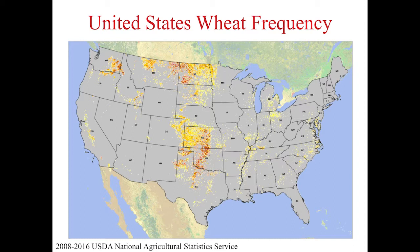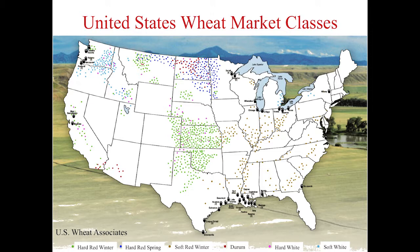Since the 1960s, a number of varieties with resistance genes have been very effective and we no longer have stem rust epidemics in the United States. So why are we even working on it? The reason is because of UG99.